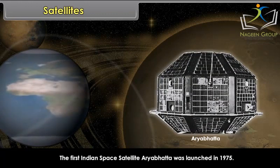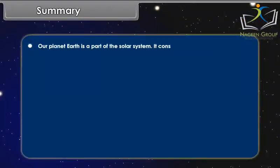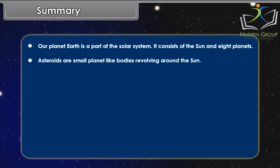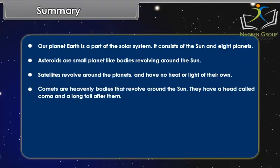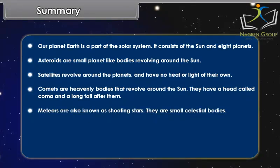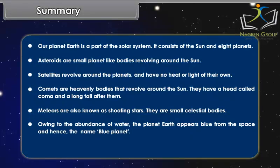Summary: Our planet Earth is a part of the solar system, which consists of the Sun and 8 planets. Asteroids are small planet-like bodies revolving around the Sun. Satellites revolve around the planets and have no heat or light of their own. Comets are heavenly bodies that revolve around the Sun, with a head called Coma and a long tail. Meteors are also known as shooting stars — small celestial bodies. Owing to the abundance of water, the planet Earth appears blue from space and hence the name Blue Planet. The Moon is the only satellite of the Earth and reflects light from the Sun.